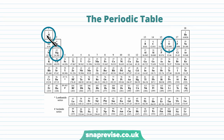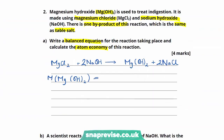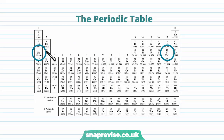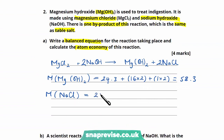Using the periodic table, magnesium has a mass of 24.3, oxygen 16, and hydrogen 1. So for Mg(OH)₂: 24.3 plus 16 times 2 plus 1 times 2, giving a total of 58.3. The molar mass of sodium chloride is 23.0 plus 35.5, giving us 58.5.